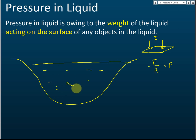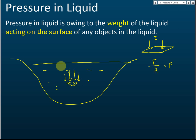Let's say there's a fish inside the pool. The fish inside this pool experiences very high pressure. Objects in a liquid experience very high pressure, and the pressure of the liquid is caused by the weight of the liquid pressing on the surface of the object. So liquid pressure is caused by the weight of the liquid on top pressing on the object.